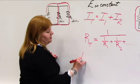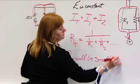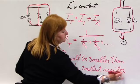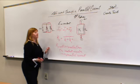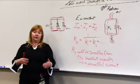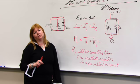In plainer language: resistance total will be smaller than the smallest resistor in a parallel network. That's one thing you'll start to notice. One more time — the resistance total within a parallel circuit will always be smaller than the smallest resistor in that network, and it has to do with this reciprocal relationship.